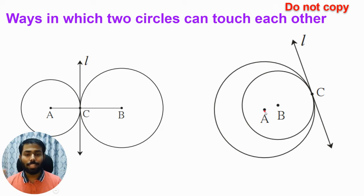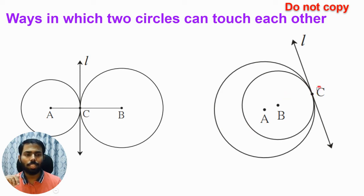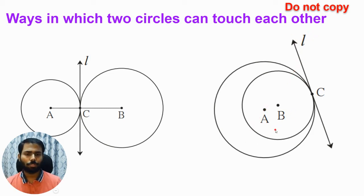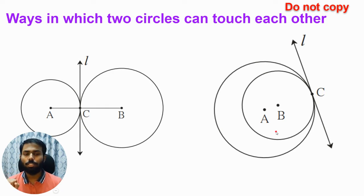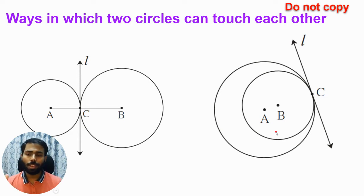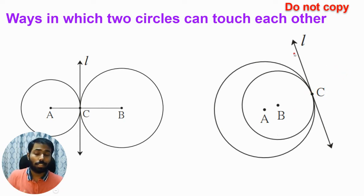The second way is: there is a bigger circle with center A, and inside that bigger circle there is a smaller circle with center B, and both of them are touching each other at point C, from which you can draw a tangent line L to both circles. These are the only two ways in which two circles can touch each other — any other arrangement and they'll touch at more than one point, which we wouldn't call touching.